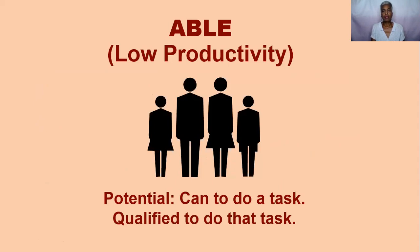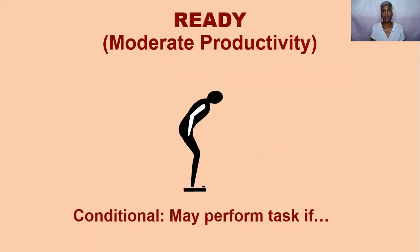Able has a low productivity level. Able has the potential to do a task, can do a task, and is qualified to do the task. But Able often needs to be prompted or reminded to do required tasks, and this causes Able's work productivity to be low. Ready has moderate productivity because Ready's work performance is conditional. Ready is often impacted by what's going on in the workplace — may get distracted, may get overwhelmed, or may be asked to do something they don't want to do.